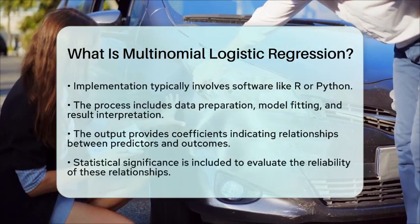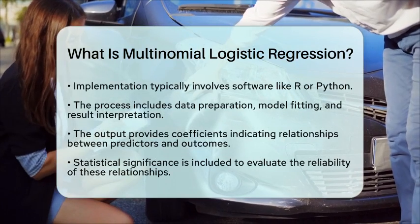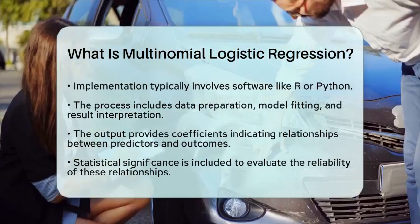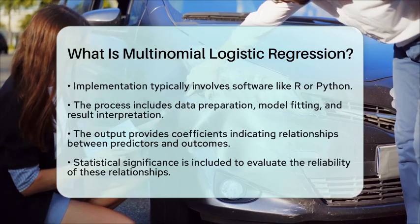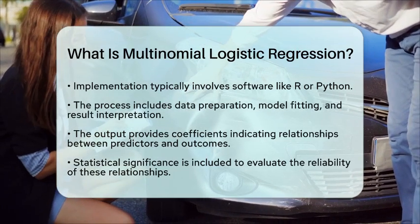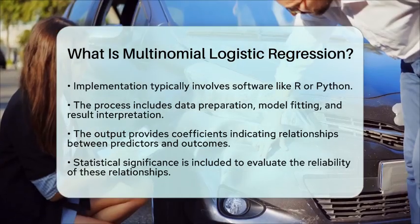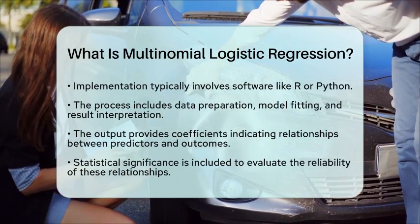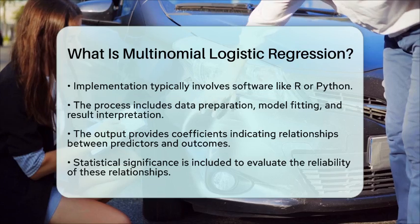The output includes coefficients that indicate the relationship between each predictor and the outcome categories, as well as statistical significance to assess the reliability of these relationships. In summary, multinomial logistic regression is a powerful tool for analyzing situations where the outcome variable has multiple categories, allowing researchers to make informed predictions based on various influencing factors.